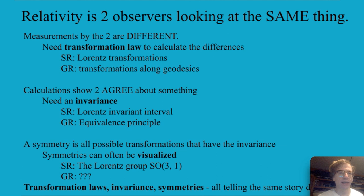So relativity both special and general is really about two people who look at the same thing and one person makes comments about what the other person is seeing and those comments are very precise. The measurements of the two observers are different and one needs a transformation law to calculate exactly what those differences are. In special relativity you use a Lorentz transformation. In general relativity you transform along geodesics.